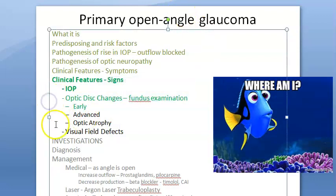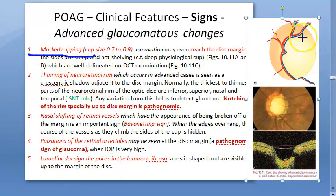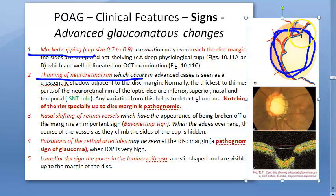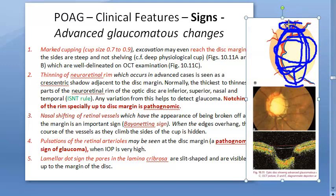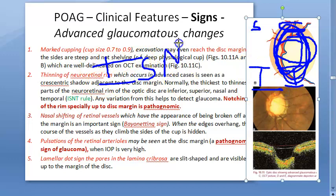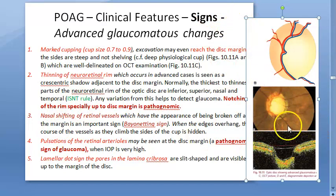Moving to advanced glaucomatous changes — the cup size is increasing progressively, causing thinning of the neuroretinal rim. The cup approaches the optic disc margin. As the neuroretinal rim in the superior and inferior poles is destroyed, the ISNT rule is no longer followed. This leads to notching of the rim, specifically up to the disc margin, which is pathognomonic of advanced glaucoma.